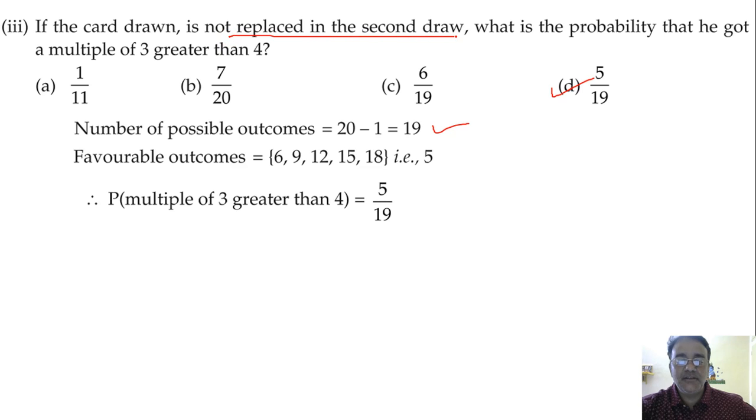Here, here, a doubt here. Because the question, there is no clear clarity about the first card. Which card was drawn? I am going to rectify the problem. If the card drawn in the first draw is 2, and it is not replaced in the second draw, what is the probability that he got a multiple of 3 greater than 4? You got my point?